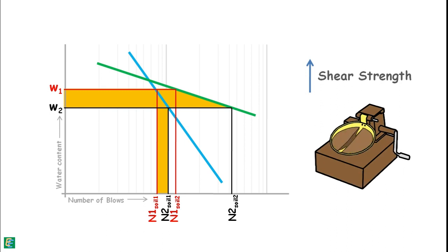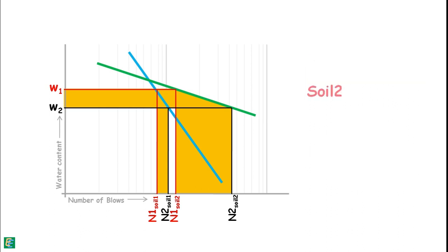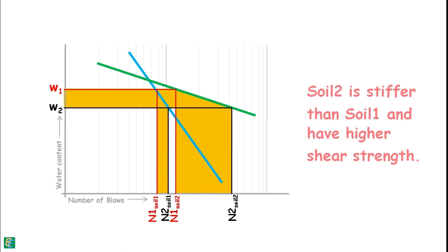Which means Soil1 gained very little shear strength, while Soil2 needs relatively more number of blows to flow and that means Soil2 has gained more shear strength. Hence it is clear that with slight decrease in the water content, Soil2 has become stiffer than Soil1 and has acquired higher shear strength.